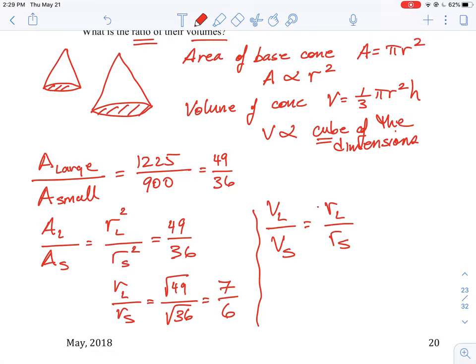We can then say the following: the volume of the large cone over the volume of the small cone is equal to the cube of the linear dimensions.